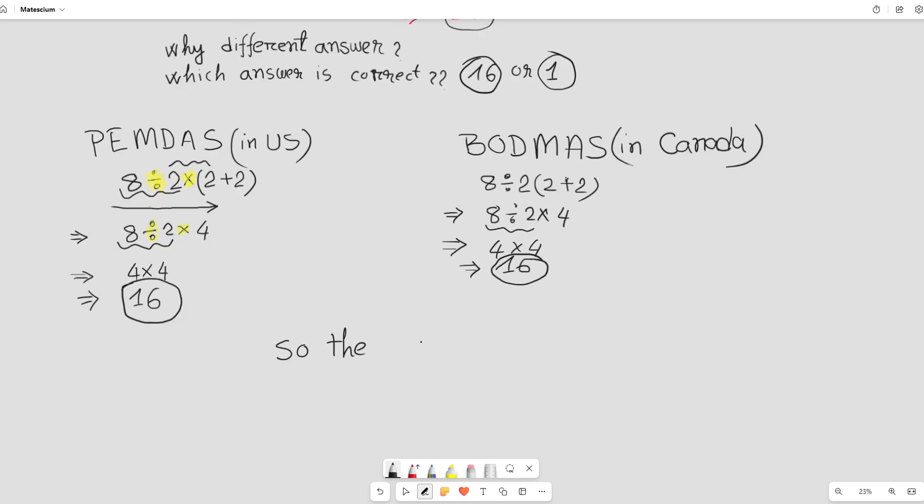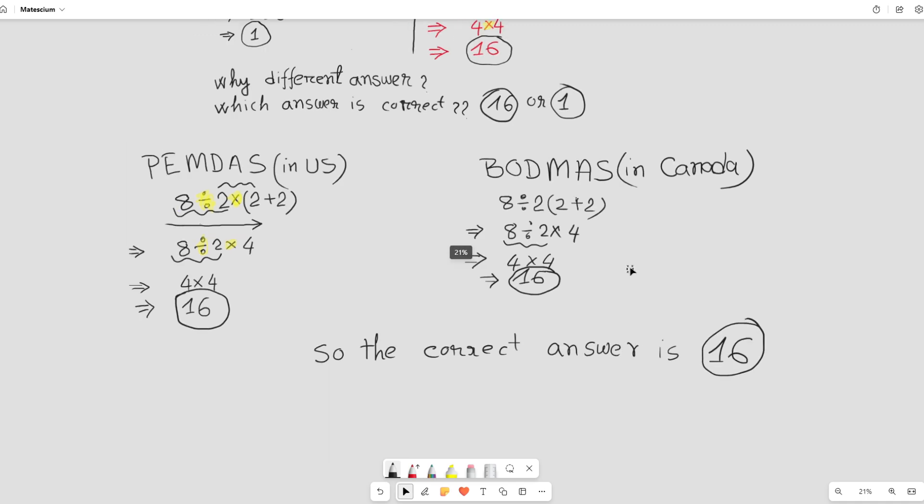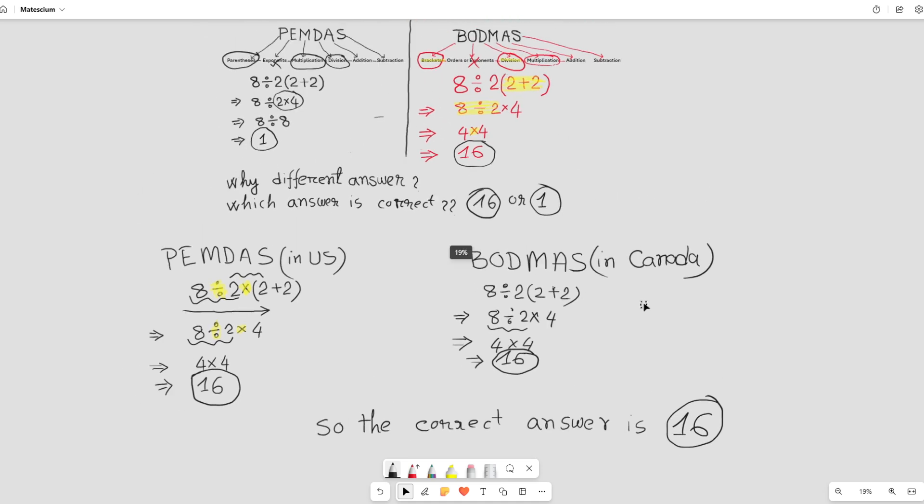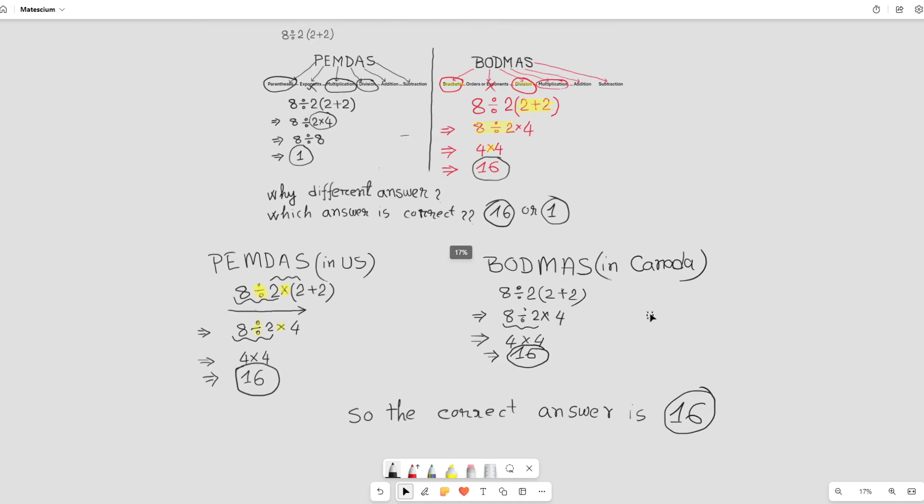So, both PEMDAS and BODMAS give the same result in this case, which is 16. The key is to consistently follow the order of operations, performing multiplication and division from left to right.